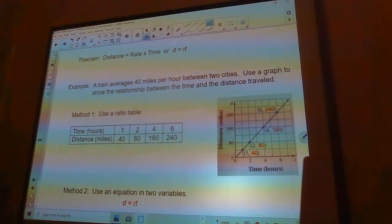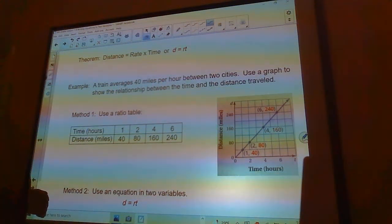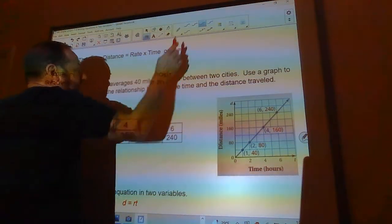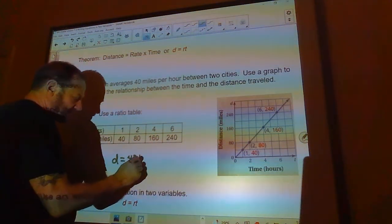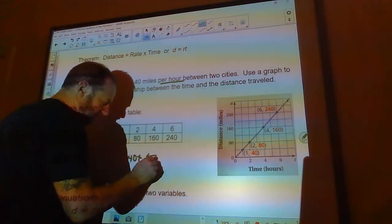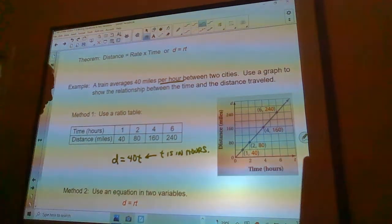So theorem, this is really important theorem. Distance equals rate times time or D equals RT. I would know that if I were you. A train averages 40 miles per hour between two cities. That's the rate. 40 miles per hour. Use a graph to show the relationship between the time and the distance traveled. So if the rate is 40, I can plug 40 in for R and I would get the equation, the distance is going to be 40 times the time. And that time is going to be in hours. So that'll tell me the distance.